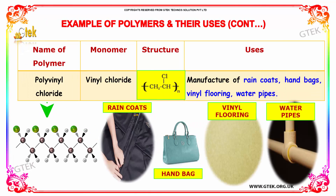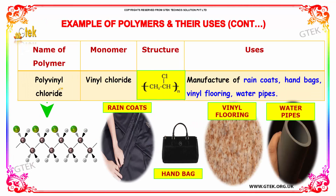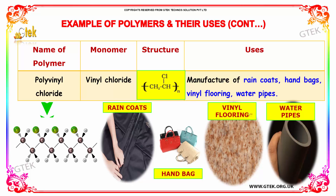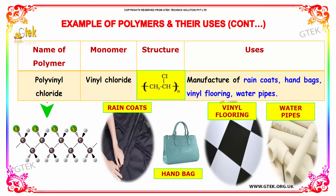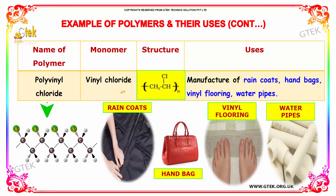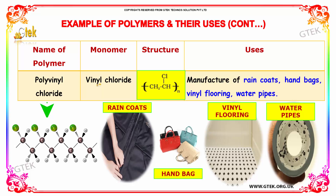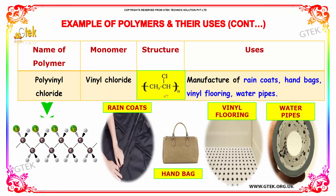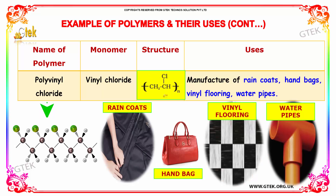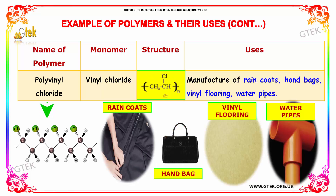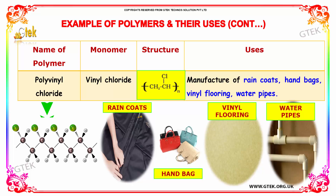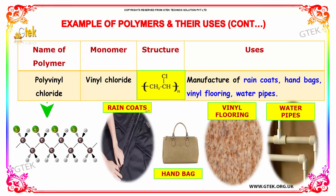Polyvinyl chloride, also known as PVC, is used in pipes. It has a monomer vinyl chloride, with structure as follows. PVC is also used for making raincoats, handbags, and vinyl floorings.